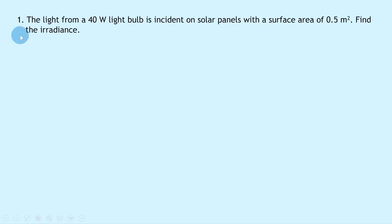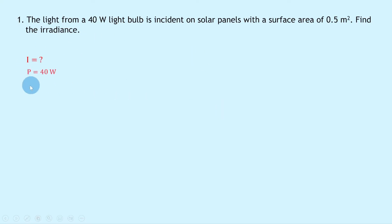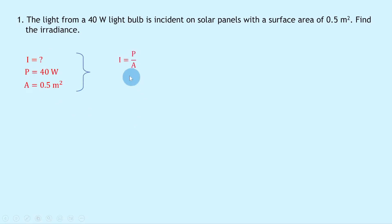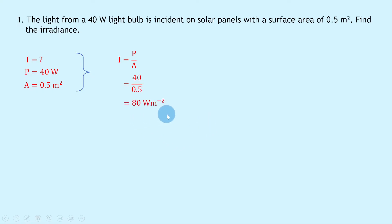Let's get started. Question one says the light from a 40 watt light bulb is incident on solar panels with a surface area of 0.5 meters squared. Find the irradiance. Writing down what we know: irradiance I is unknown, power P is 40 watts, area A is 0.5 meters squared. Our equation is I equals P over A, so substituting: 40 divided by 0.5 gives an answer of 80 watts per square meter.